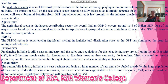Agriculture sector: The agriculture sector is the largest contributing sector to the overall Indian GDP, covering around 16% of India's GDP. One of the major issues faced by the agriculture sector is the transportation of agricultural products across states. Next, the FMCG sector benefits from savings in logistics and distribution costs due to the removal of CST.